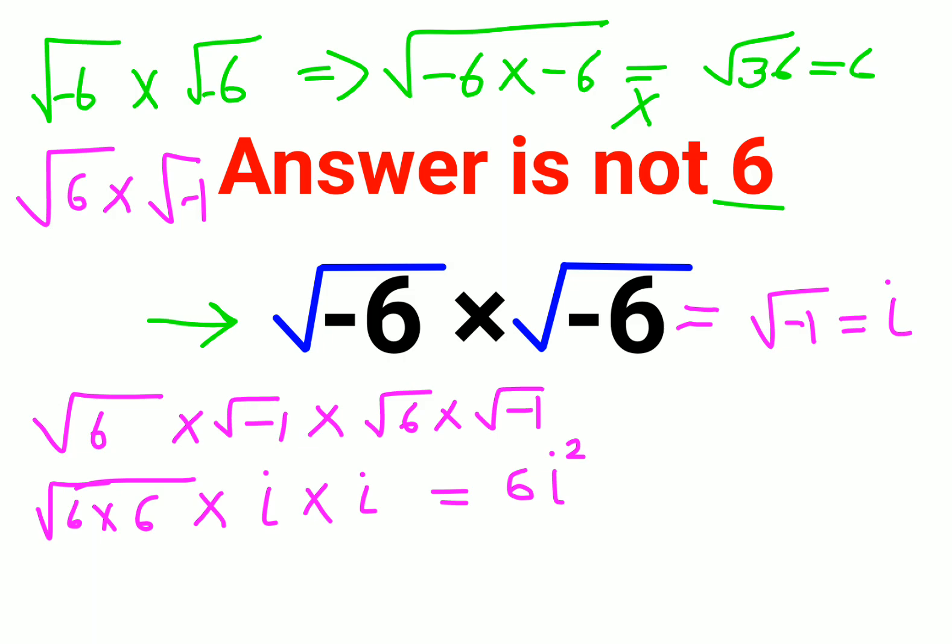Now we found, I want to find the value of i square. I will square both sides. So root of minus 1, the whole square. Therefore, I can say i square equals to minus 1.